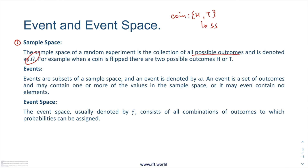If we have two coins, the possibilities may change. With two coins, we will have two heads and two tails. When we flip coins, we can have two heads, one head and one tail, two tails, or one tail and one head. So for two coins, the sample space would include four possible outcomes. Here with one coin the number of outcomes were only two. So sample space is the total number of possible outcomes, or all possibilities that we can have while performing an event.